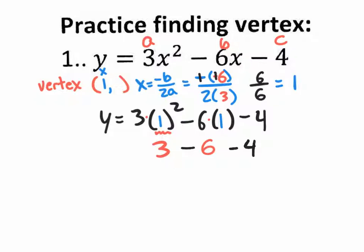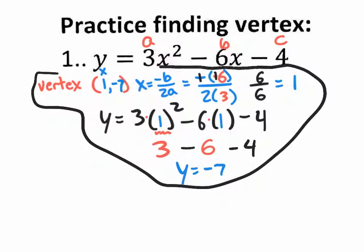So my y value is negative 7. That's the y value of the vertex. That's all these instructions are asking for — to find the vertex. But I want to take this a step further. I want you to tell me the domain. What's the domain, even though you don't have the graph? X equals all real numbers.